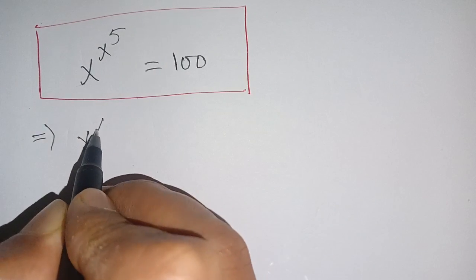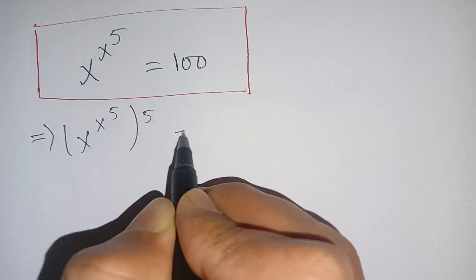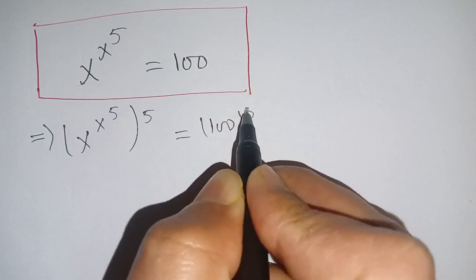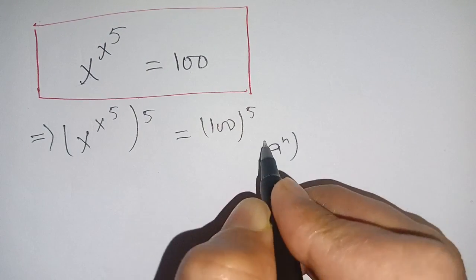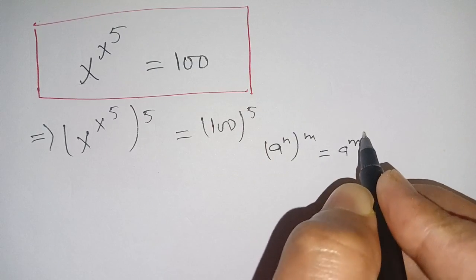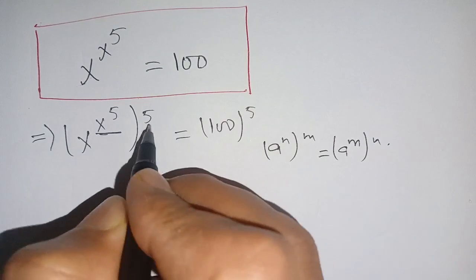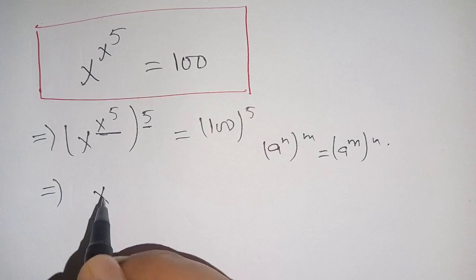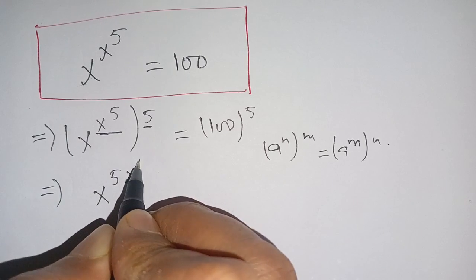We raise both sides to the power 5, writing x^(x^5) whole power 5 equals 100^5. We know that (a^n)^m can be written as a^(m·n). Here n is x^5 and m is 5. Applying this identity, we get x^5 times x^5 equals 100^5.